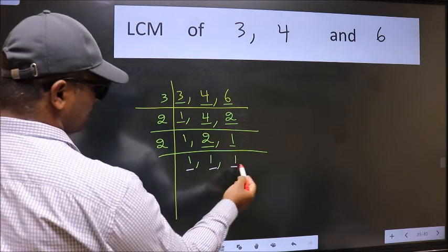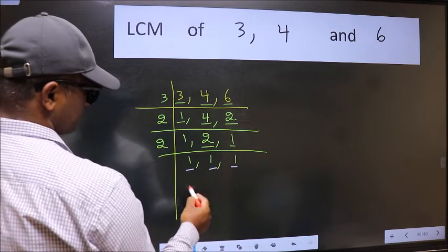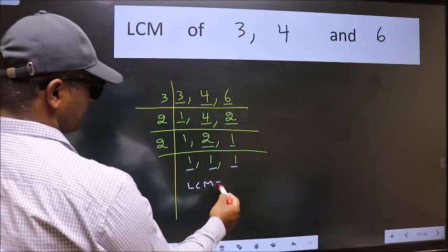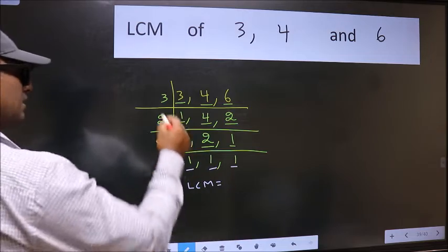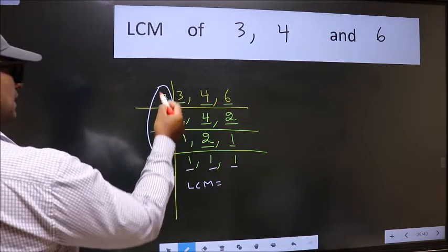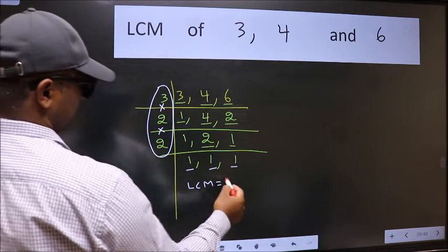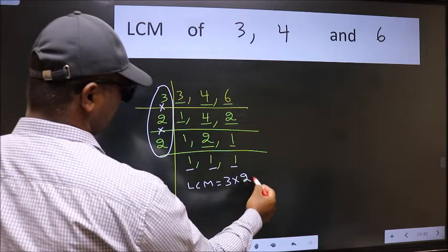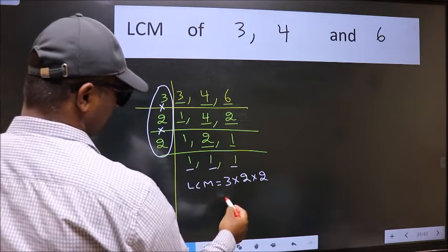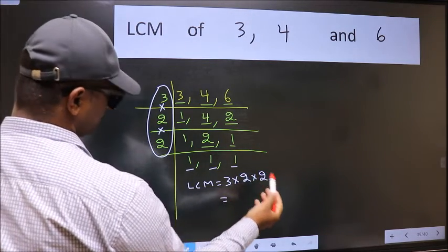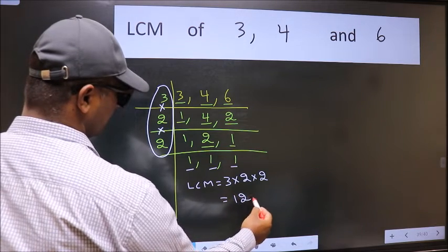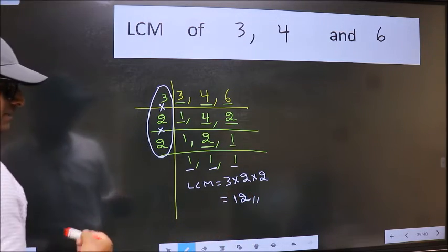Now we got 1 in all the 3 places. So our LCM is the product of these numbers, that is 3 into 2 into 2. When we multiply these numbers we get 12 is our LCM.